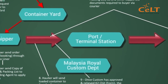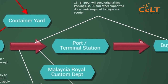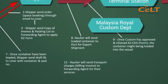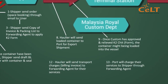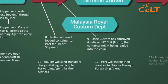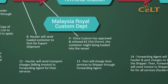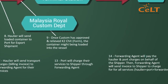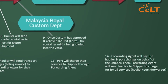Step 11: Shipper will send original invoice, packing list, BL and other supported documents required to buyer via courier. Step 12: Haulier will send transport charges or bill invoice to forwarding agent for their services. Step 13: Port will charge their services to shipper through forwarding agent.